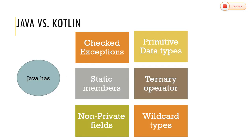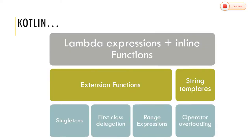Coming to the differences between Java and Kotlin: Java has checked exceptions, static members, non-private fields, primitive data types, ternary operator, and wildcard types — these are not in Kotlin. Whereas Kotlin has lambda expressions, inline functions, extension functions, single expressions, first-class delegation, range expressions, operator overloading, and string templates.